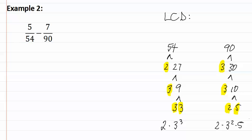For our least common denominator, we write each of the unique factors: a two, a three, and a five. Then we pick those with the highest exponent. There's only one two, the highest exponent for threes is three, and only one five. We multiply these together: two times five is ten and three cubed is twenty-seven, so our least common denominator is two hundred and seventy.